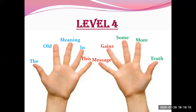To recapitulate Level 4: each of the 10 words is allocated to your 10 fingers. The first four words — 'the old meaning in' — are color-coded blue, sitting on the thumb, forefinger, middle finger, and ring finger of the left hand. The three middle words — 'this message gains' — are color-coded red, on the little finger of the left hand and little and ring fingers of the right hand. The final three words — 'some more truth' — are color-coded green, on the middle finger, forefinger, and thumb of the right hand.